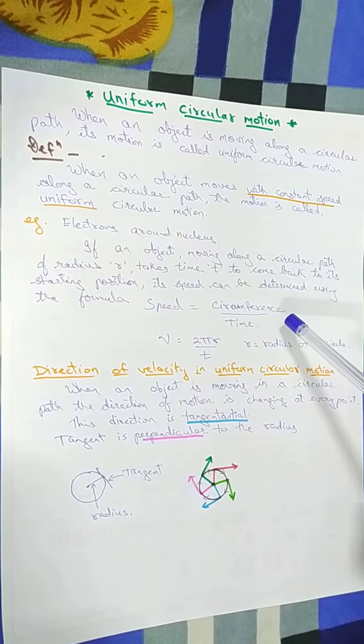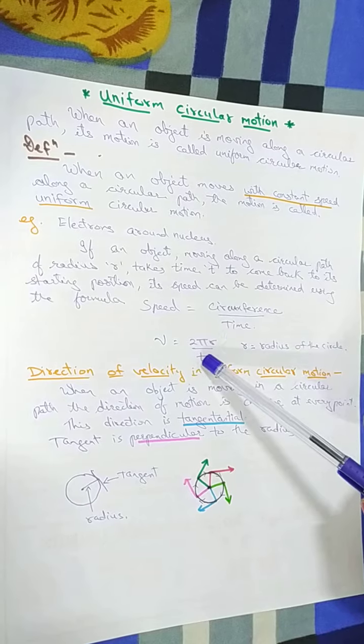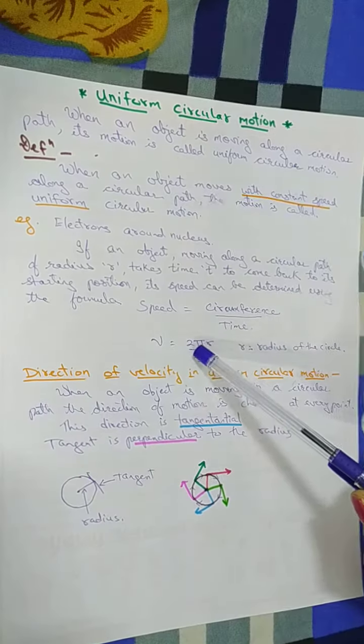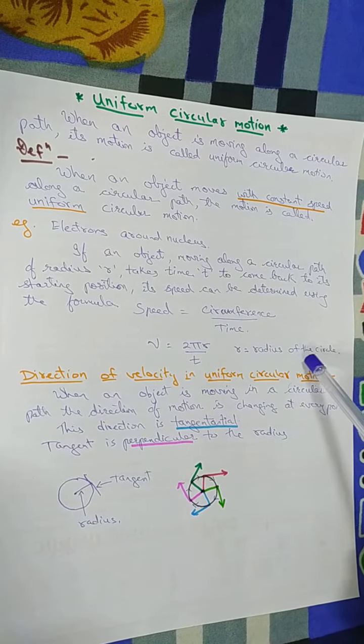Direction changes at every point, hence it becomes the velocity. So velocity equals 2πr upon t. 2πr, that is the circumference of the circle, and here r is the radius of the circle.